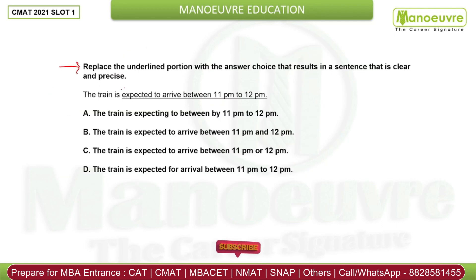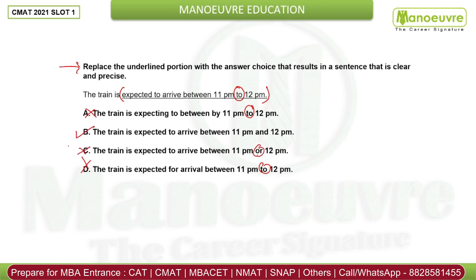In this question, the underlined part is 'expected to arrive between 11 pm to 12 pm' — we need to improve it. The mistake is here: we do not use 'to' with 'between.' The correct pair is 'between...and,' not 'between...to.' So option B will be your right answer.